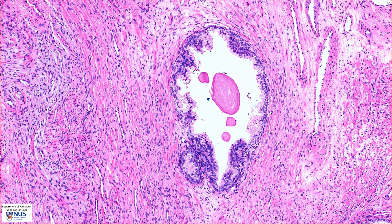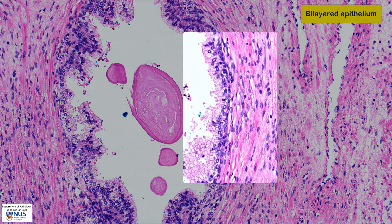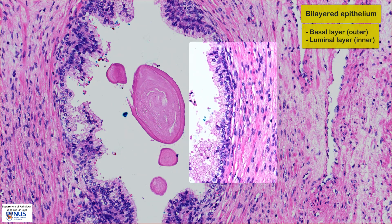The glands are lined by bilayered epithelium, and in some areas where they are orientated well, we can actually see the two layers very clearly. Here is the outer basal layer and here is the inner luminal layer. The luminal cells are usually columnar in shape and they have more cytoplasm than the basal cells.